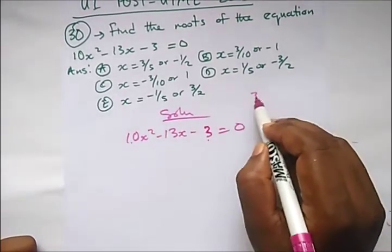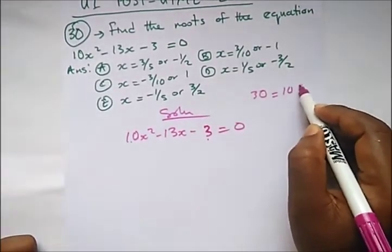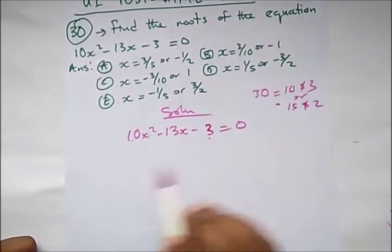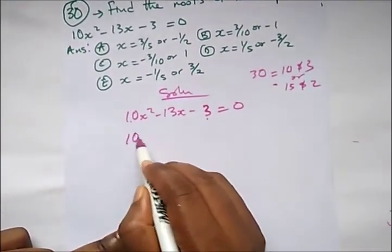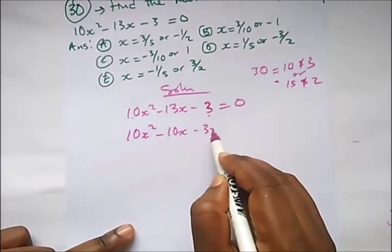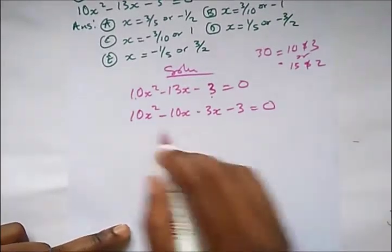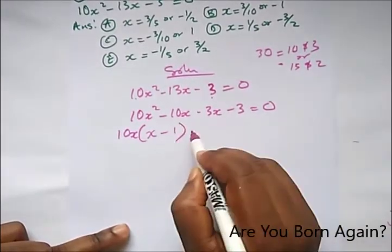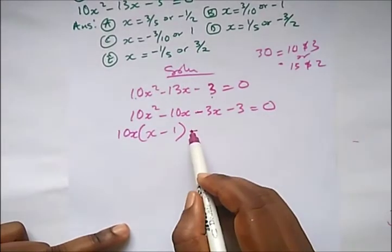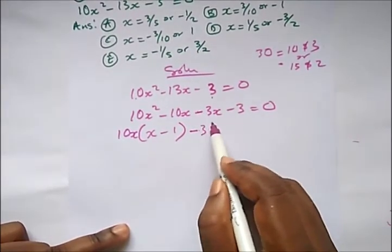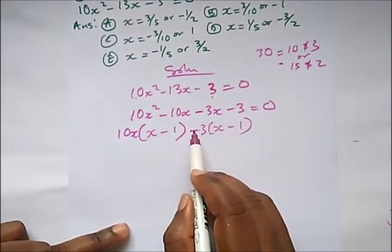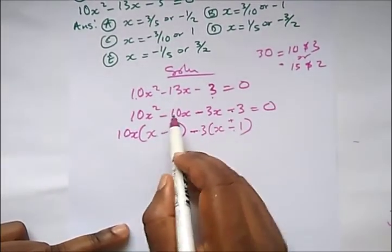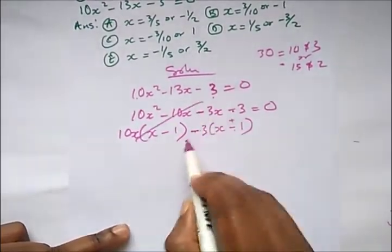We'll say 10 times 3, which is 30. The factors can either be 10 and 3, or 15 and 2. If we use 10 and 3, it will be: 10x² minus 10x minus 3x minus 3 equal to 0. Here 10 would be common, so we get x minus 1 bracket, but there's a problem — if we bring out 3 and say x minus 1, when you open the brackets it will change to a positive sign, which is not the same. So we can't use minus 10 and minus 3. This would be wrong.